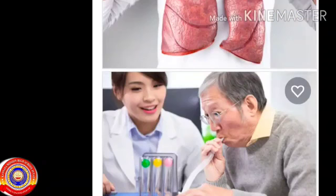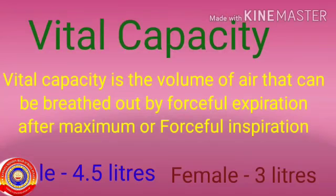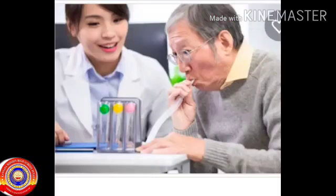Next is vital capacity — vital capacity is the volume of air that can be breathed out by forceful expiration after maximum or forceful inspiration. Vital capacity can be taken as an indicator of normal and healthy respiratory activity and strength of the muscles in the thoracic cavity. This is about 4.5 liters in males and 3 liters in females.